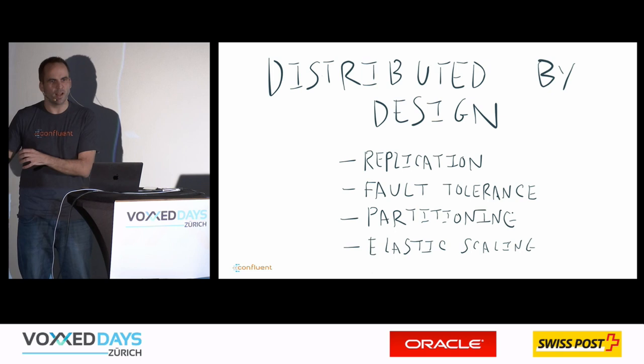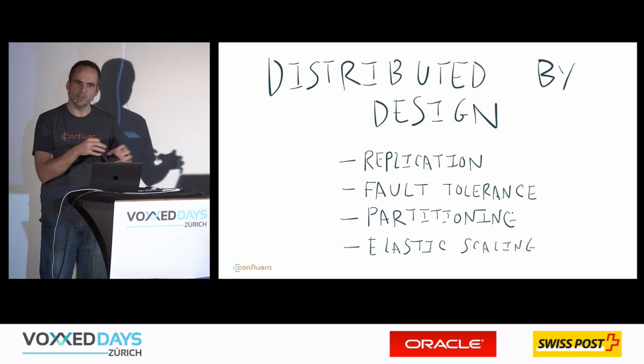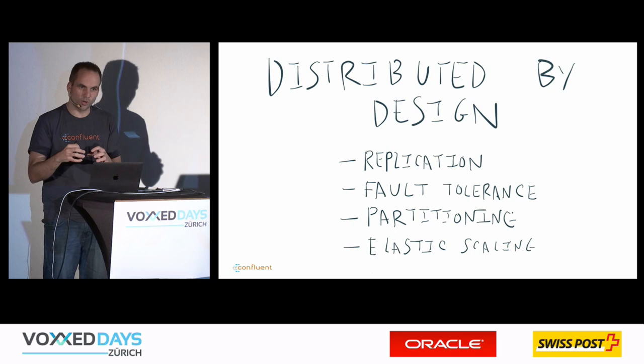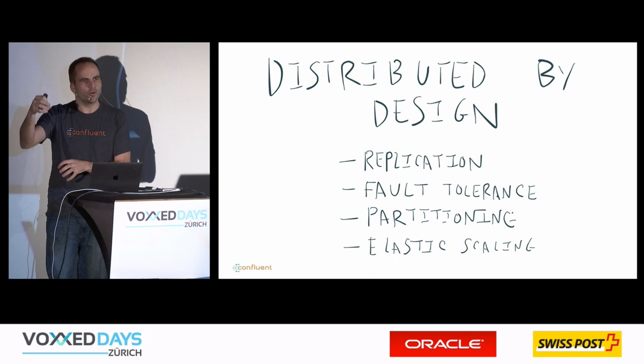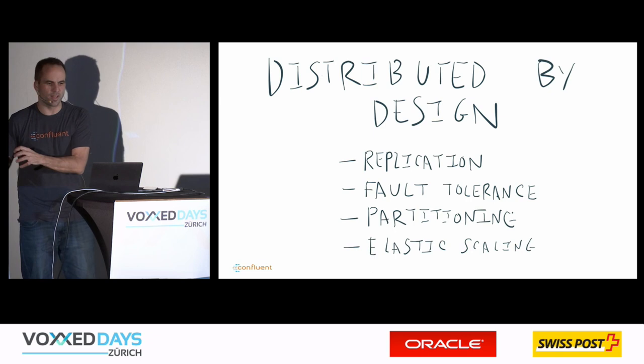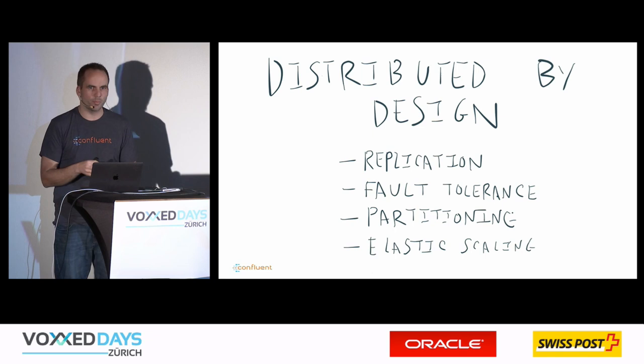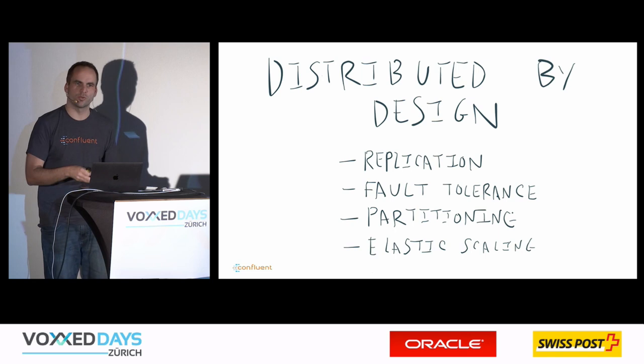Kafka is built for replication with a typical replication factor of two or three, so messages are stored on multiple brokers. If a node goes down it can be read from another. Consumer failover is also built in: if you have ten consumers and one or two go down, the other eight continue consuming and Kafka manages the rebalancing automatically — you don't have to handle that in your implementation.